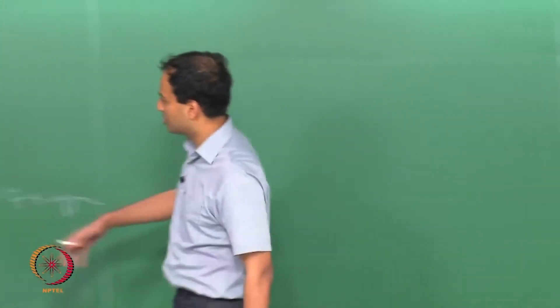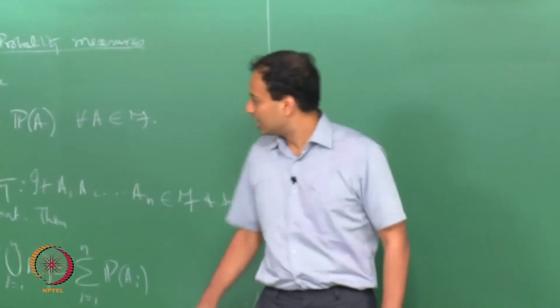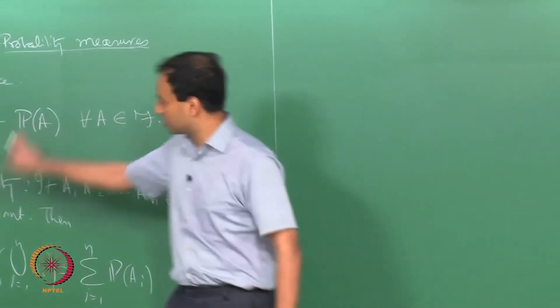These two properties are very easy — it is just finite additivity and disjointness.